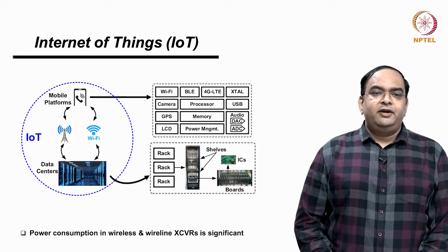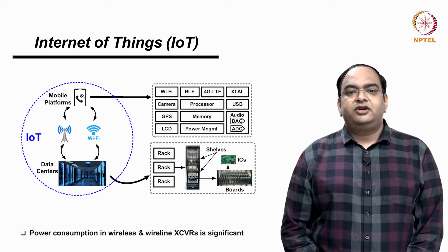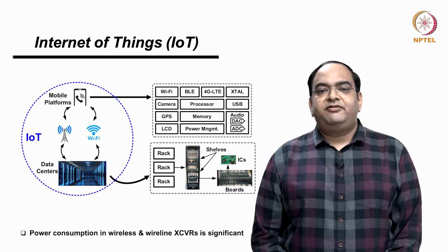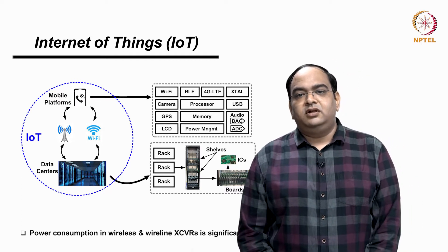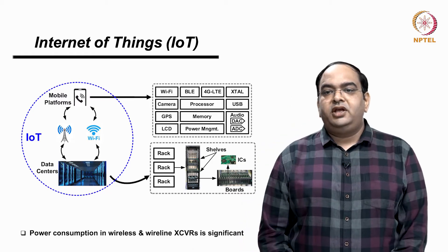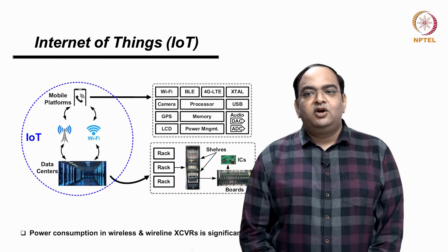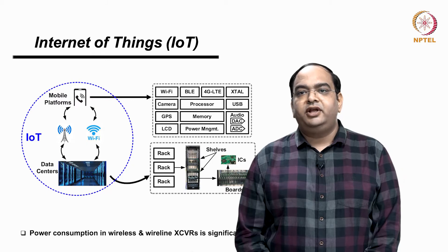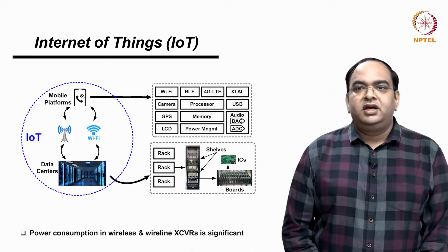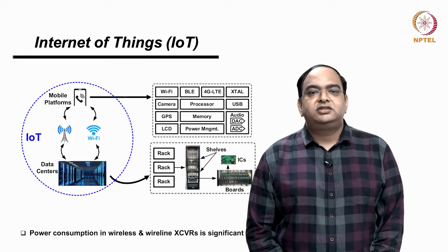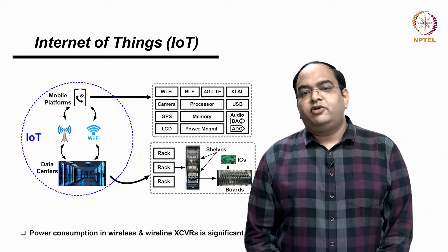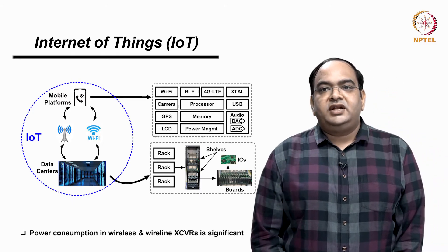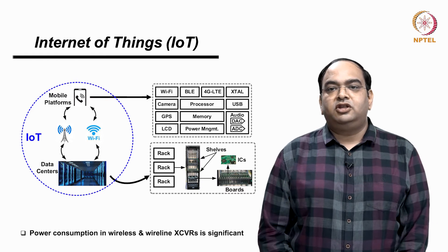However, both these platforms house a similar set of integrated circuits doing the job of processing, storing and transferring the data at different scales. For example, mobile phones have a processing unit, memory, wireless transceivers for different standards, wireline transceivers to communicate between the processor and the memory and to the external peripheral devices. The analog to digital converter and digital to analog converter are there for the audio and for other activities. Also, you have a power management unit to manage the power of different ICs which are present on the mobile phone.